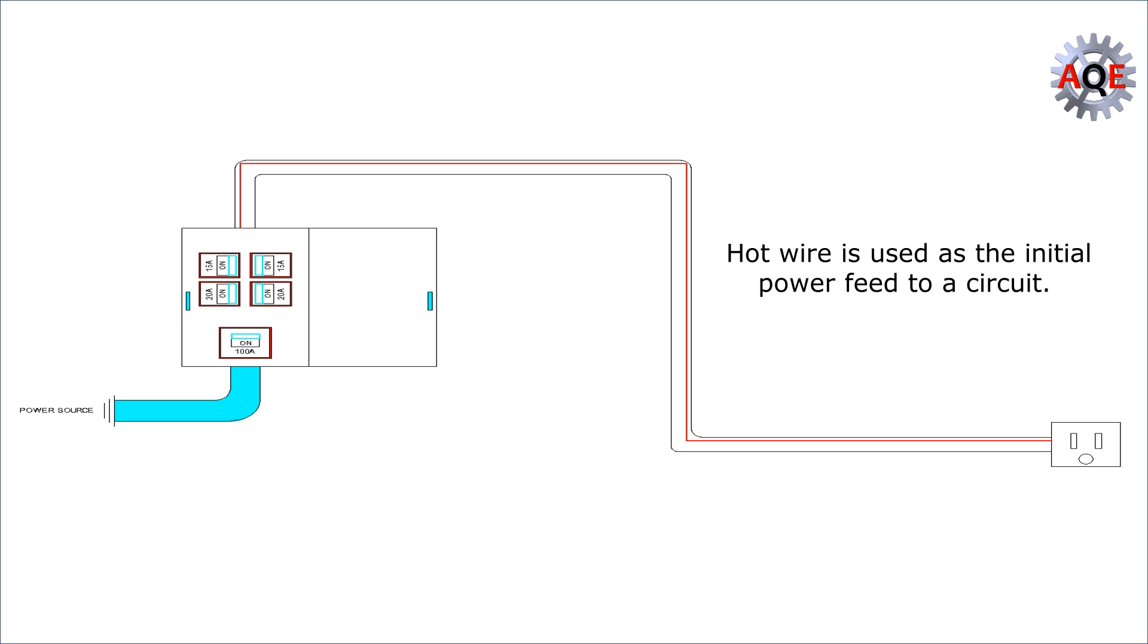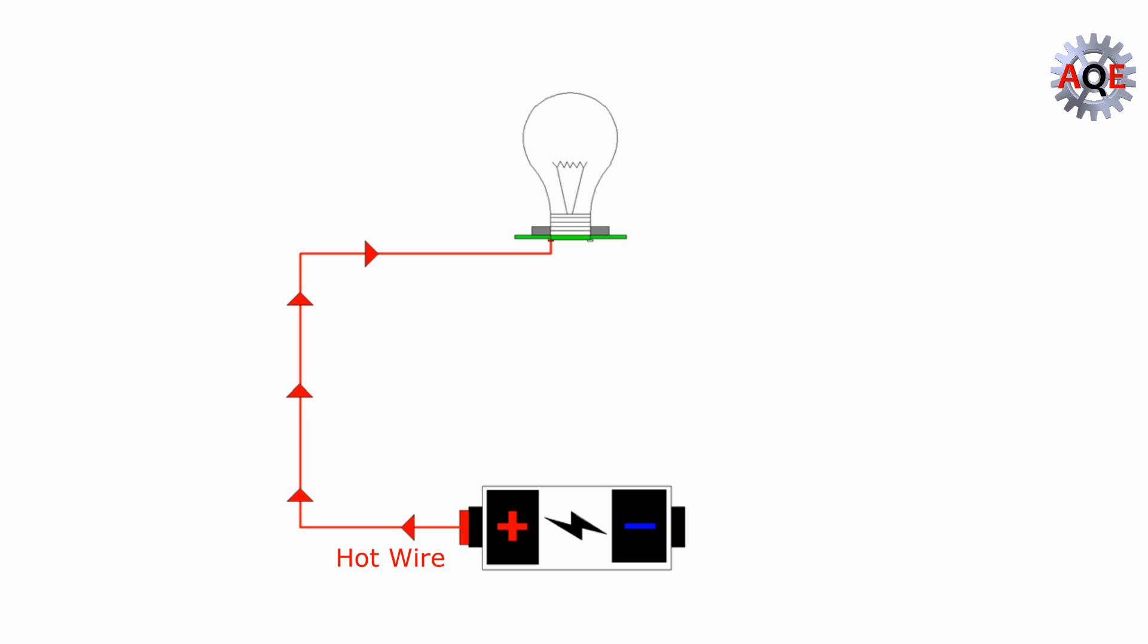Hot wire is used as the initial power feed to a circuit. It carries the current from the power source to the outlet. Acting as the first instance of a circuit, they are always carrying electricity, meaning it is dangerous to touch a hot wire while there is a power source feeding it.